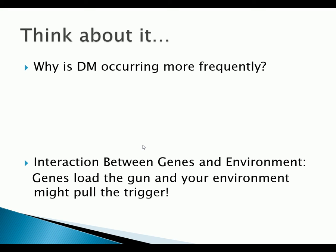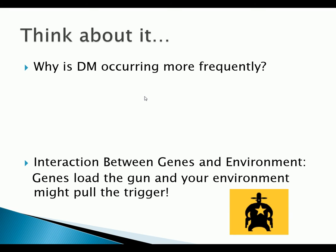Why is diabetes occurring more frequently? We have a longer life expectancy, so we see more of it. Type two mainly peaks in the 50s, and obesity across all age groups is increasing along with sedentary lifestyles and overeating. There is an interaction between genes and the environment — genes load the gun, and your environment might pull the trigger. You may be set up for type two diabetes genetically, but it won't go off unless you do things in your lifestyle like become obese. If you diet and exercise, even with a genetic tendency, you can keep from getting type two diabetes.